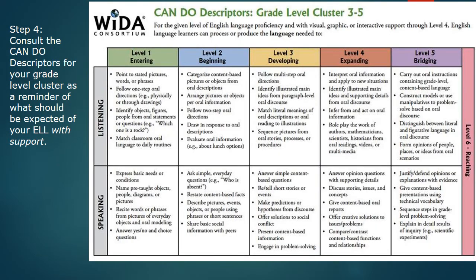As you begin to develop tasks for your assessment, a good place to look for modification ideas are the can-do descriptors for your grade-level cluster. This will give you ideas of what your learner could be expected to do based on their given proficiency in speaking, listening, reading, or writing. For example, if the class task is to give a content-based presentation using technical vocabulary, and your student is at speaking level 2, you can look at the chart for speaking level 2 and allow this learner to use pictures, objects, or short phrases and sentences to support their project — so they're still demonstrating content knowledge in a way that meets their language needs.